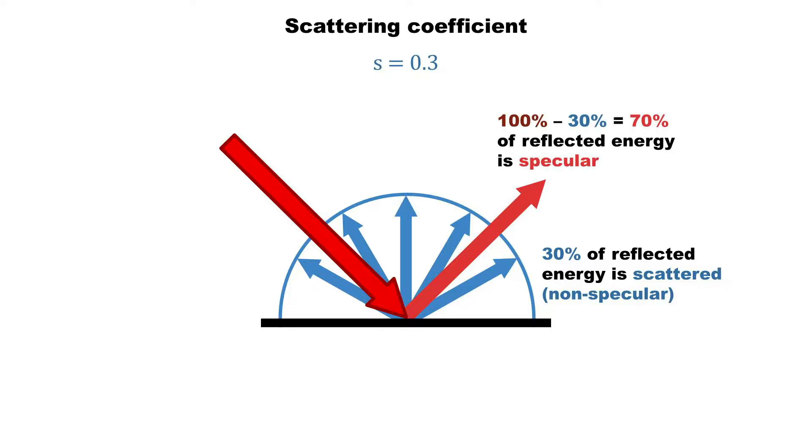Conversely, the specularly reflected energy would be the total reflected energy minus the 30% of scattered energy, leaving us with 70% for the specular component. In order to produce an accurate simulation, scattering coefficients should be assigned to all surfaces in the model.